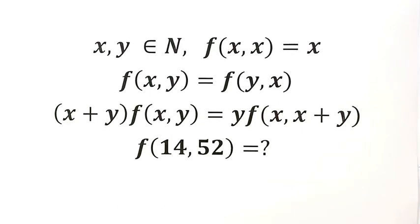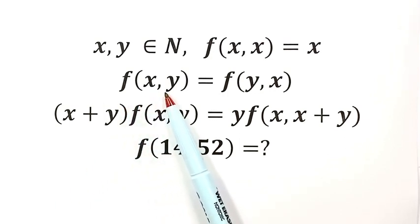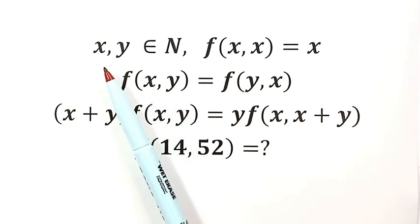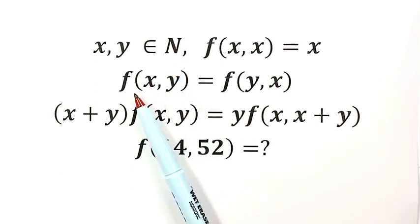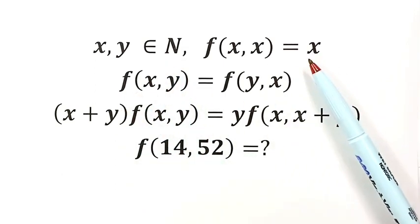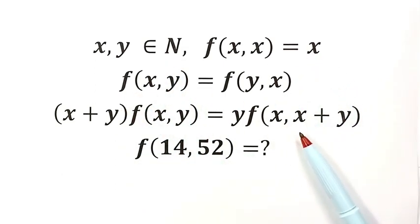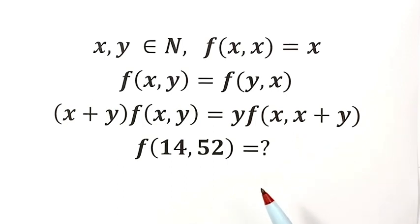In this video, we're going to solve a function problem. Here, f is a function of two variables x and y, where x and y are two natural numbers, and the function satisfies these three conditions, or three identities. Then we're going to determine a specific function value.